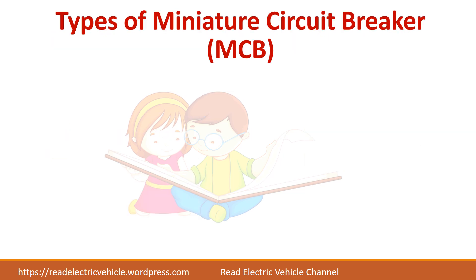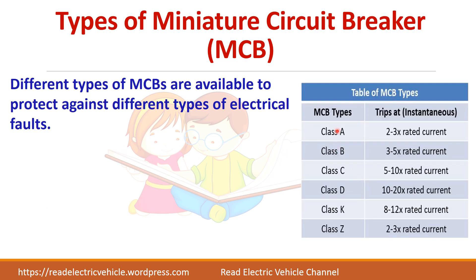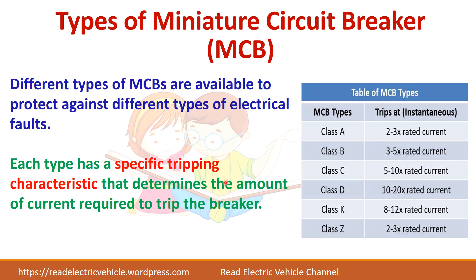There are different types of circuit breaker classified into class A, B, C, D, K, and Z. For each type, the rated current required to trip varies. Class A will trip at 2 to 3 times the rated current; class B trips at 3 to 5 times the rated current. Each type has a different tripping characteristic. Out of all these types, class B, C, and D are widely used.